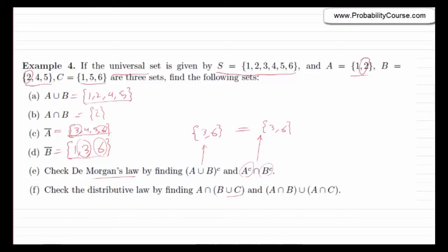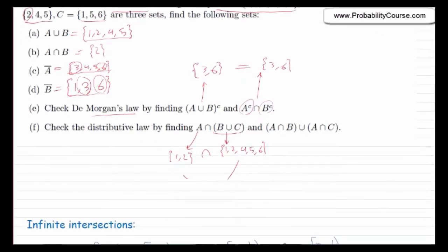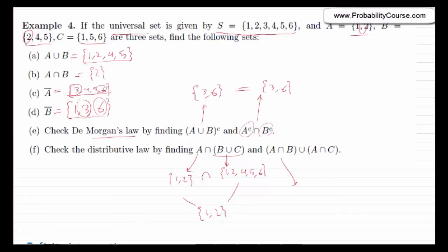The last question checks the distributive law. B ∪ C: B = {2, 4, 5} and C = {1, 5, 6}, so B ∪ C = {1, 2, 4, 5, 6}. A is {1, 2}, so A ∩ (B ∪ C) = {1, 2}. Now A ∩ B = {2} and A ∩ C = {1}, so (A ∩ B) ∪ (A ∩ C) = {1, 2}. Both sides equal {1, 2}, confirming the distributive law.